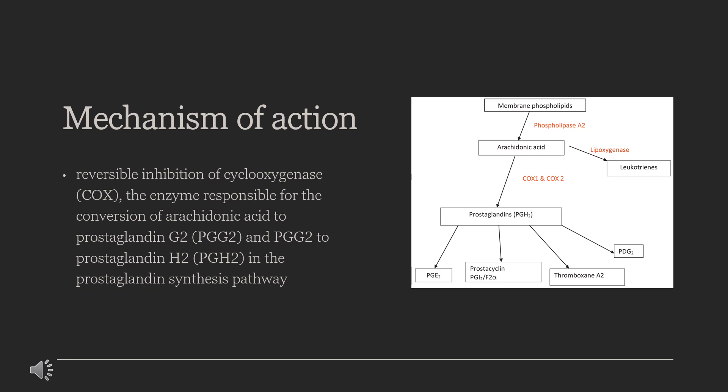Unlike most NSAIDs, which inhibit both types of cyclooxygenases — COX-1 and COX-2 — Celecoxib is a selective non-competitive inhibitor of cyclooxygenase-2 (COX-2) enzyme. COX-2 is expressed heavily in inflamed tissues, where it is induced by inflammatory mediators. The inhibition of this enzyme reduces the synthesis of metabolites that include prostaglandin E2 (PGE2), prostacyclin (PGI2), thromboxane (TXA2), prostaglandin D2 (PGD2), and prostaglandin F2 (PGF2).